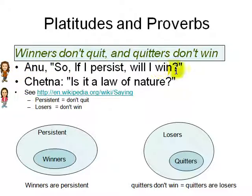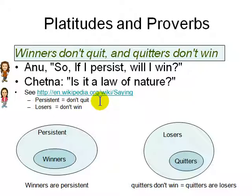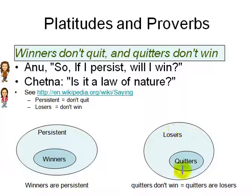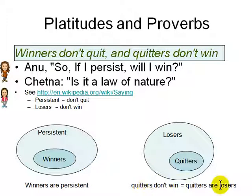Anu asks, 'So if I persist, will I win?' The question raised is whether this is a law of nature or just something someone said to make money. If you look it up, 'winners' are defined as persistent people and 'losers' as quitters — but that's circular. You can be persistent and still not win, and you can lose without being a quitter. Drawing a diagram helps expose this logical flaw.